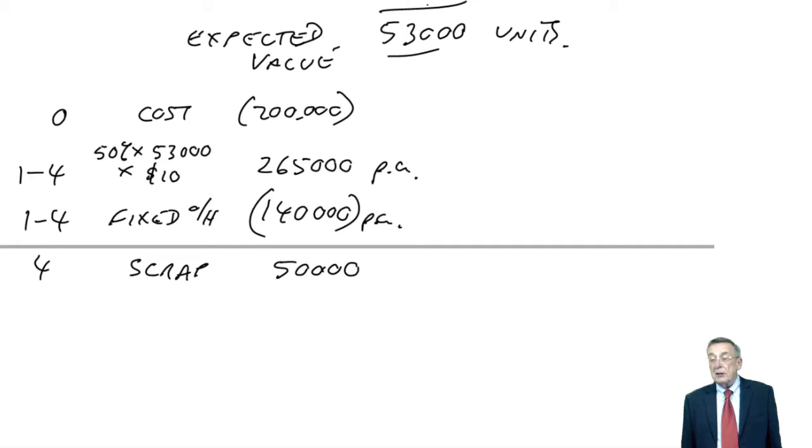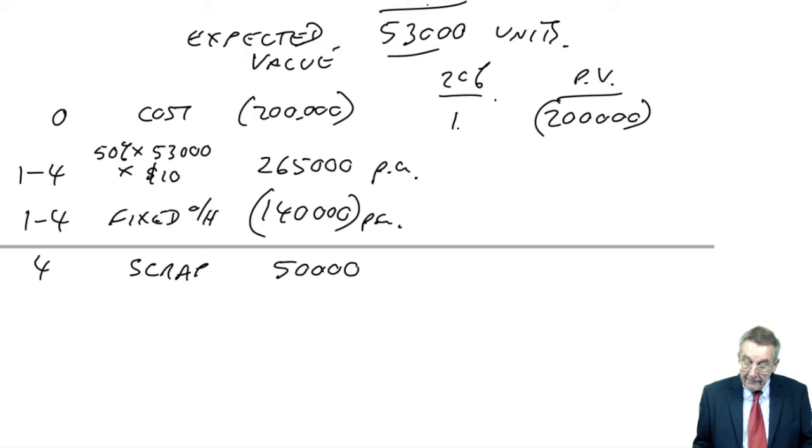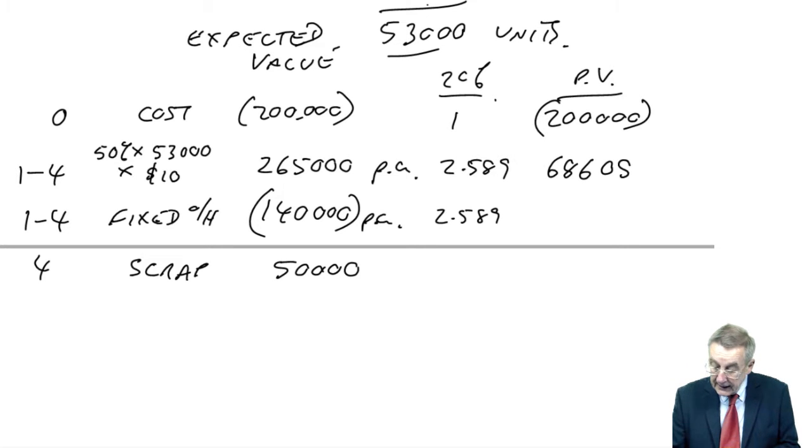All right, I will discount, though I shouldn't really need to, to be honest. We've done it enough times. But if I find my tables, the cost of capital here is 20%. So 200 times 1 is 200. Now the four-year annuity factor at 20% is 2.589. So the present value of the contribution is £686,085.